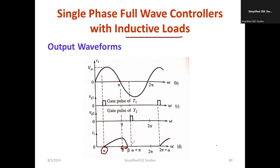Thyristor T2 will be activated at a firing angle of alpha plus pi. The device does not turn off at exactly pi — instead, there is a deviation. That delay must be accounted for because current and voltage are not in phase. Whenever the input voltage goes negative, the current never falls at pi because of the lagging of current behind the voltage.